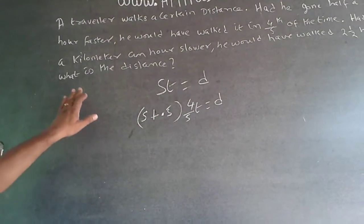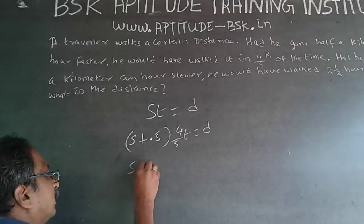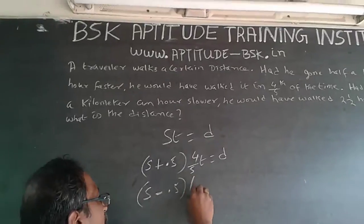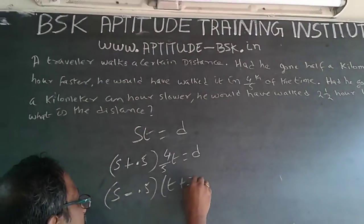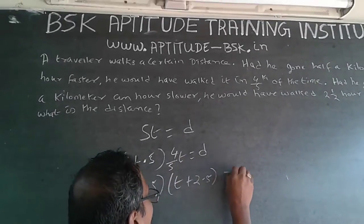Then the next statement is, had he gone half a kilometer an hour slower, so it will become S minus 0.5. He would have taken 2 and a half hours more, T plus 2.5. More means plus. Then I multiply it, so it will be equal to D.